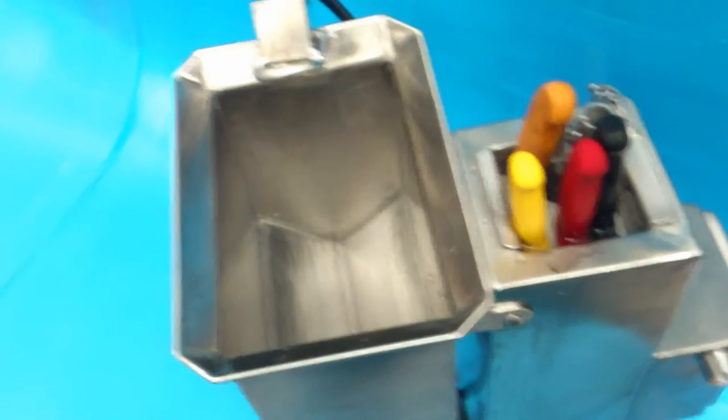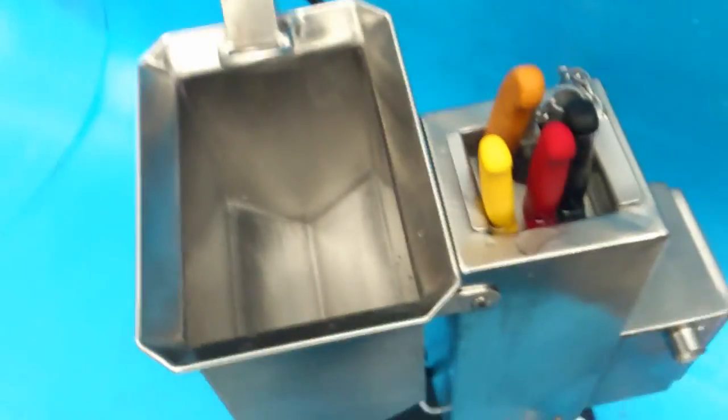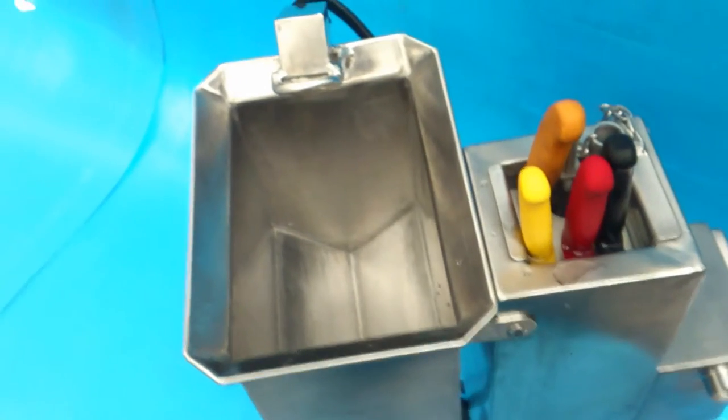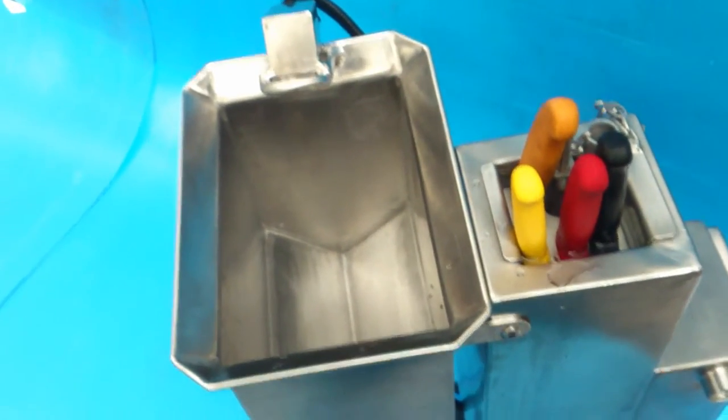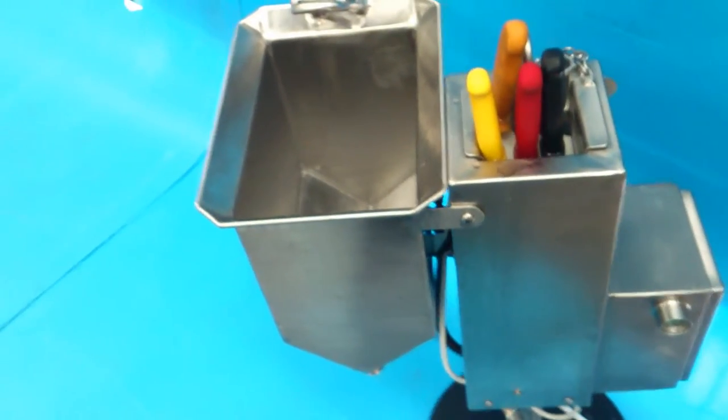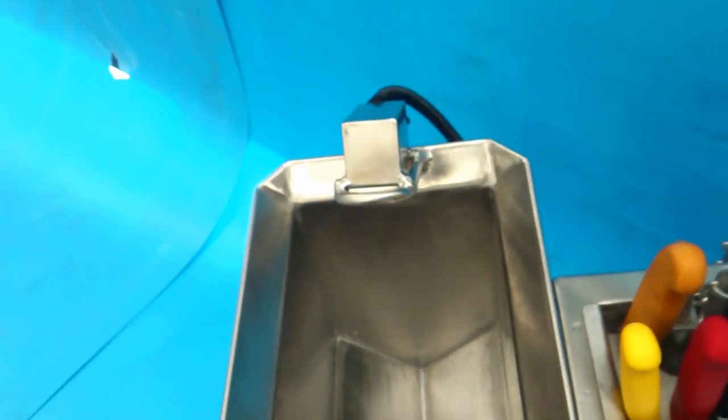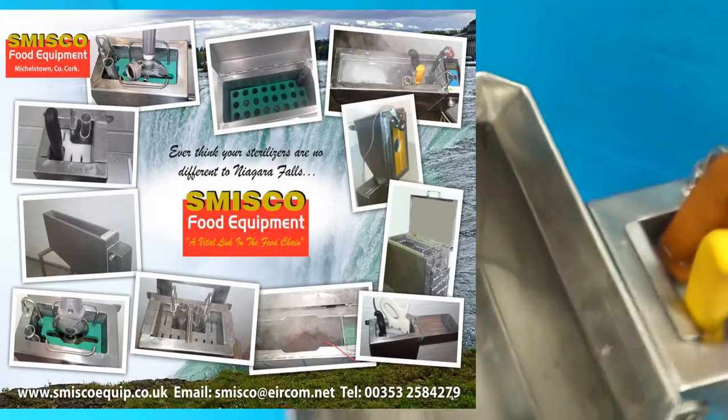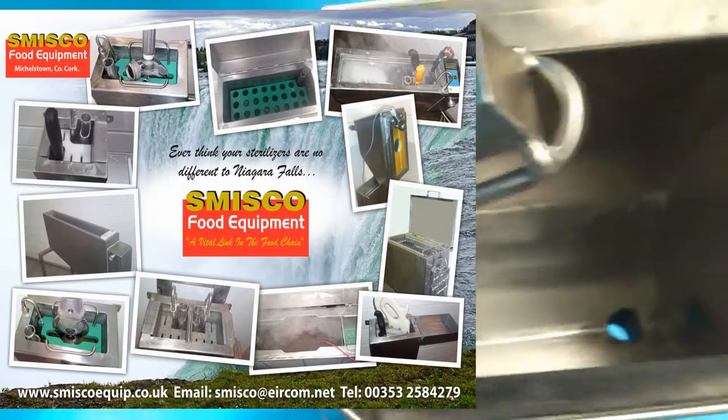Beside the sterilizer we have here a piece of kit that every butcher can only dream about, but now it's reality. We all know in slaughter halls things can be cumbersome. Spisco has designed this particular unit so that it is ideal for washing knives, especially if you are in congested areas.